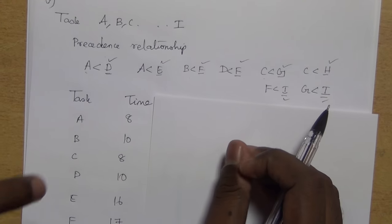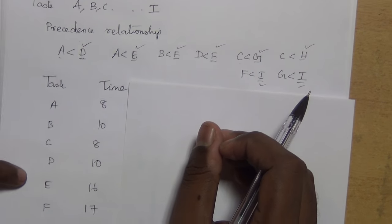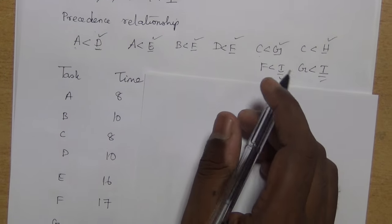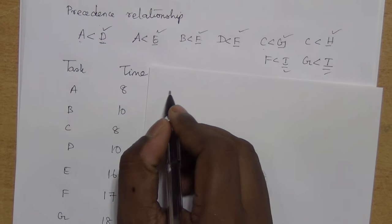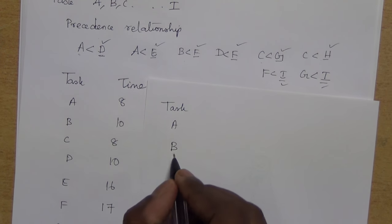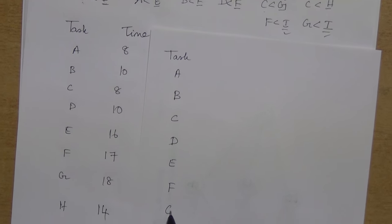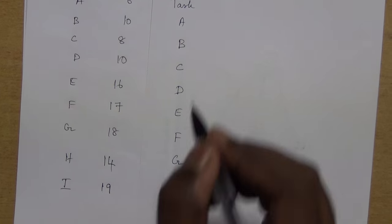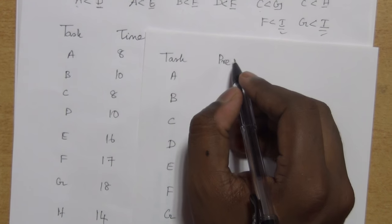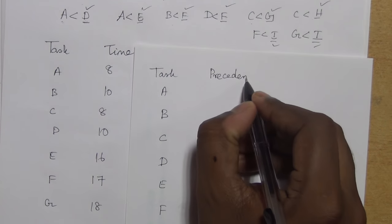We have to frame a network based on this precedence relationship as well as the task relationship. We have tasks A, B, C, D, E, F, G, H, I and we have to frame a predecessor relationship — we can write this as precedence or predecessor.